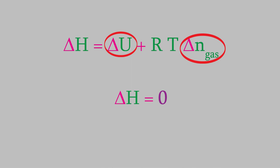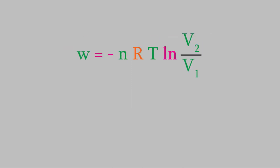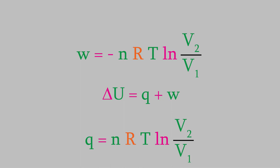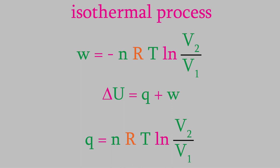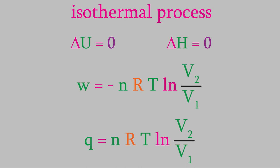Next, let's look at the work. Back in video 15, we saw that the work for a reversible process can be expressed using a specific equation, so we can calculate the work. What about the heat? We don't have an equation for the heat directly, but we have the first law of thermodynamics. Since delta U is zero, the heat and work must be equal to each other but opposite in sign. So our expression for heat is just the negative of the expression for work. Note that this is only true for an isothermal process.